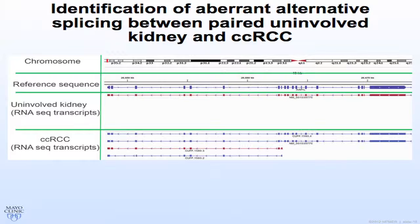To identify aberrant alternative splicing between paired uninvolved kidney and renal cell carcinoma, I worked with Mia Champion who designed a Cufflinks algorithm to identify alternatively spliced events. Looking at the chromosome and reference sequence, the uninvolved kidney expresses the reference sequence. In the renal cell carcinoma, however, we see three additional different isoforms. This gene is called absent in melanoma — so at least it makes sense that it's not absent in kidney.